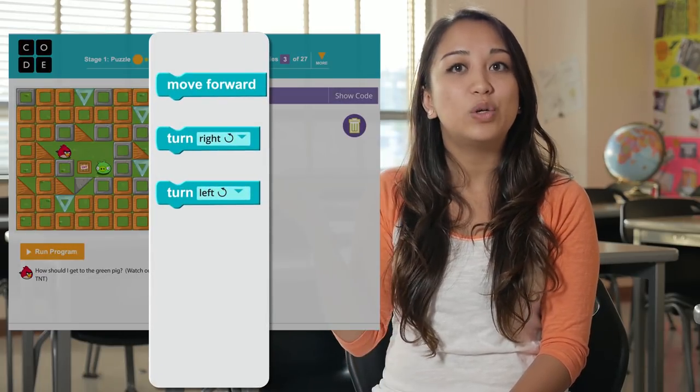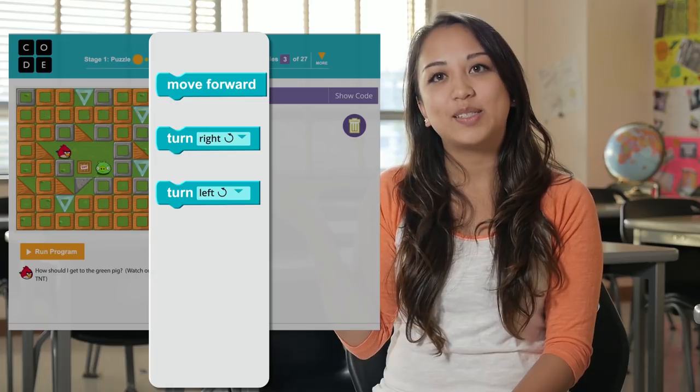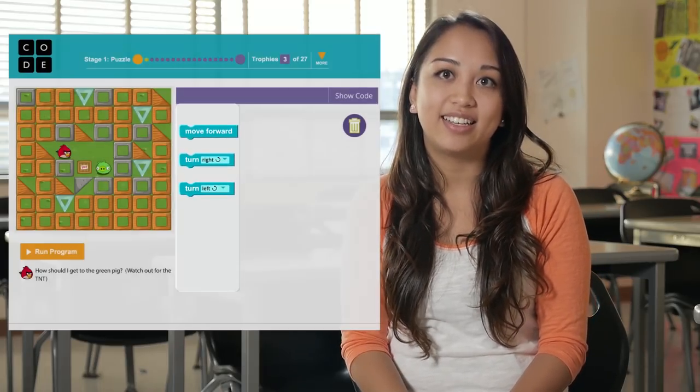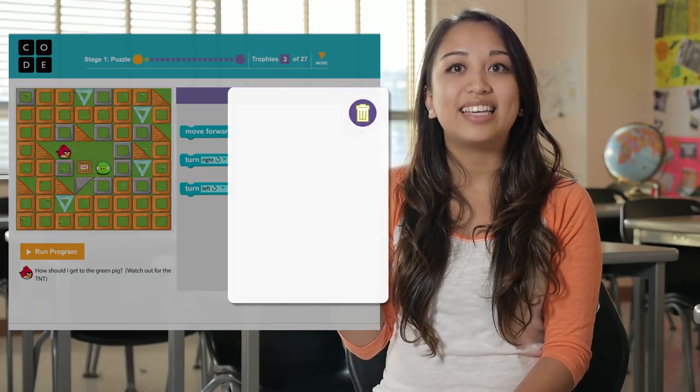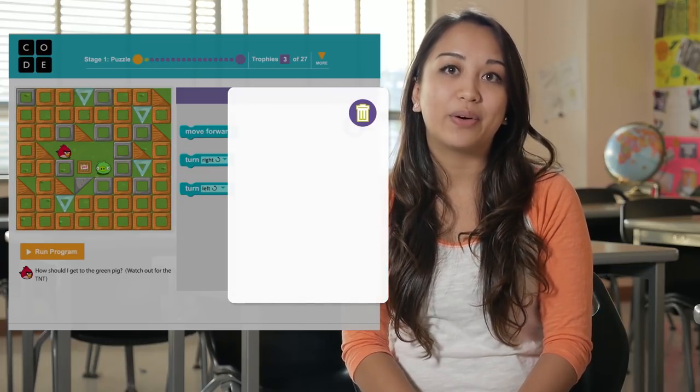This middle area is the toolbox, and each of these blocks is a command that the bird can understand. The white space on the right is called the workspace, and this is where we'll build our program.